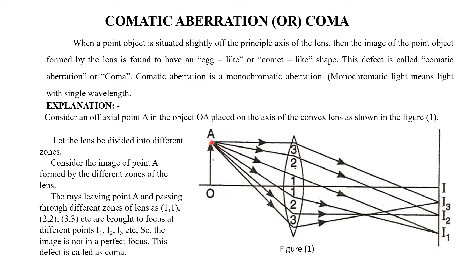The rays coming from point A are allowed to pass through these different zones. Different zones form different images as shown in this figure. The rays passing through zone 1-1 form image I1; through zone 2-2 they converge at point I2; and through zone 3-3 the image is I3. That means for a single object there are more than one image — three images — which is said to be a defect. If you combine all three images, you get an image which is egg-like or comet-like in shape, not a single point image. Hence, this is said to be a defect.